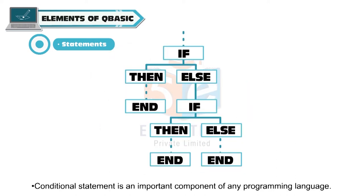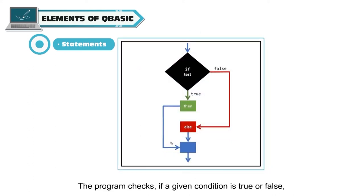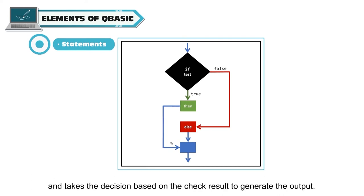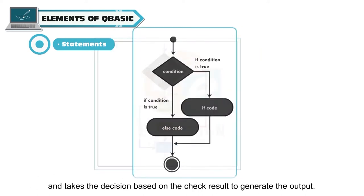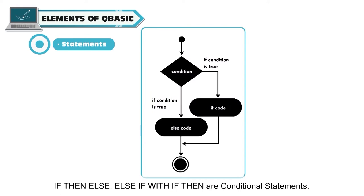Conditional statement is an important component of any programming language. The program checks if a given condition is true or false and takes the decision based on the check result to generate the output. IF, THEN, ELSE, ELSE IF, and WITH IF THEN are conditional statements.